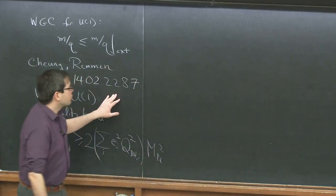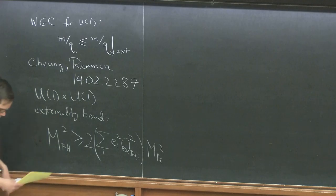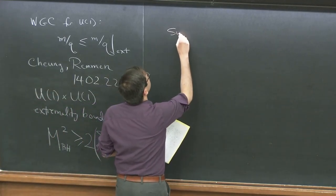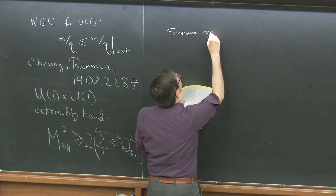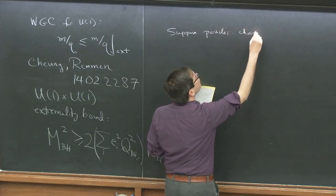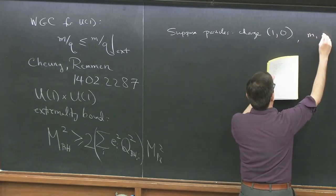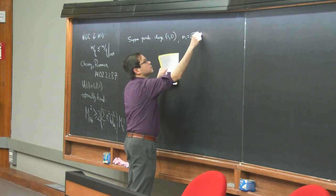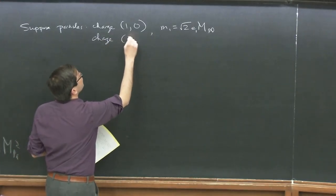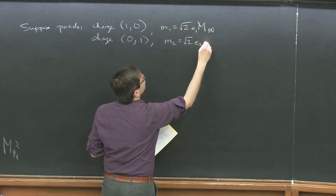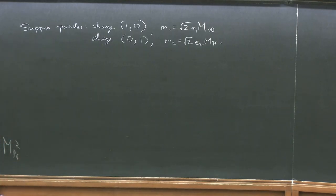The claim is that if I just satisfy the Weak Gravity Conjecture for each U(1) individually, I don't necessarily allow all black holes that saturate this bound to discharge. Suppose I give you two charged particles — one of which has charge one under the first gauge group with mass chosen to saturate the weak gravity bound, and the second similarly has charge one under the second gauge group.